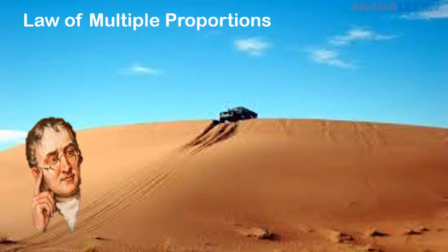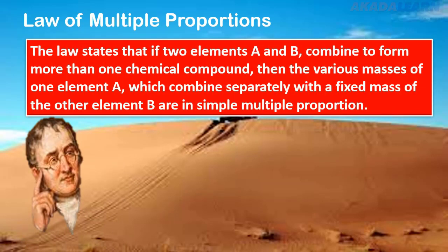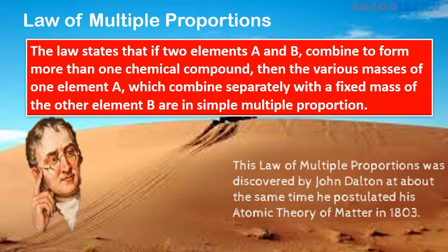Moving on now, we go to the law of multiple proportions. This law states that if two elements A and B combine to form more than one chemical compound, then the various masses of one element A which combine separately with a fixed mass of the other element B are in simple multiple proportions. This law was discovered by John Dalton at about the same time he postulated his atomic theory in 1803.